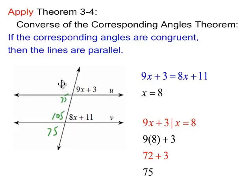This is a linear pair, so that's 105, and another 105 over here. Vertical angles and linear pairs confirm all the angle measures.